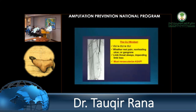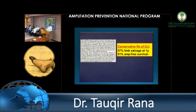Remember, CLI is CLI is CLI. If you have a CLI, it needs to be managed as soon as possible because there is always a threat to the limb and impending limb loss. Conservative treatment of CLI can save patients — studies have shown 57% limb salvage at one year with optimal conservative therapy through wound management, blood glucose management, infection management, and statins.